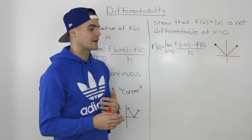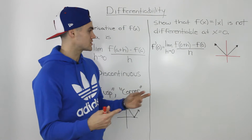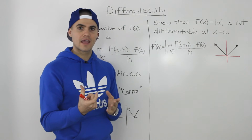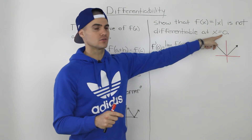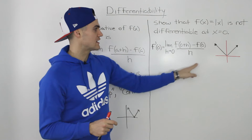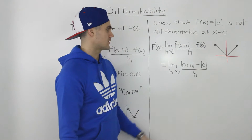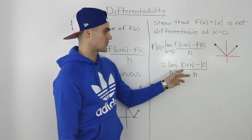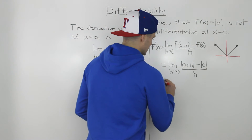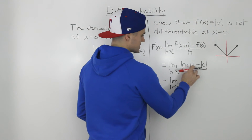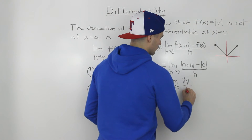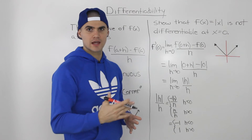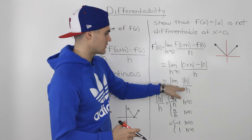Notice that usually when finding derivatives, we find the general derivative function by plugging in x. However, now that we're proving non-differentiability at a specific x value, we plug in that specific value directly. Substituting, we get the absolute value of (0+h) minus the absolute value of 0, all over h, which simplifies to the limit as h goes to 0 of |h| over h. Because we have an absolute value inside a limit, we need to use the one-sided limit strategy and convert |h|/h into a piecewise function.